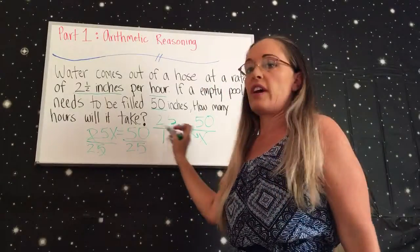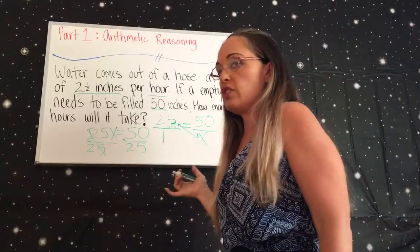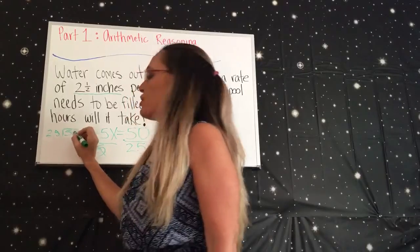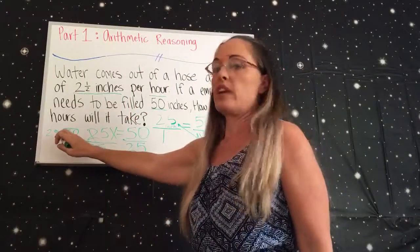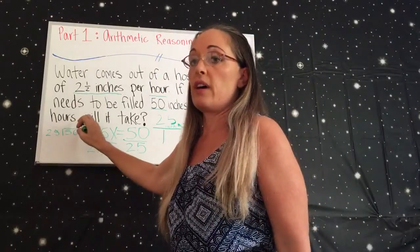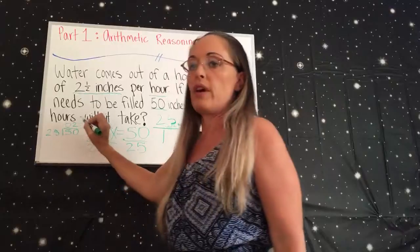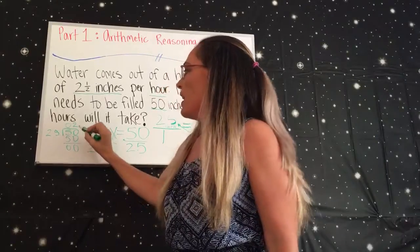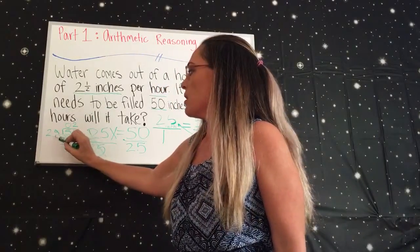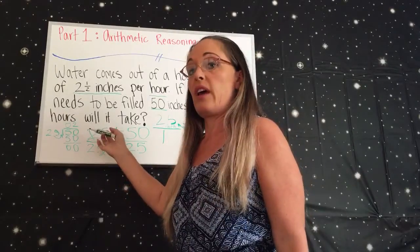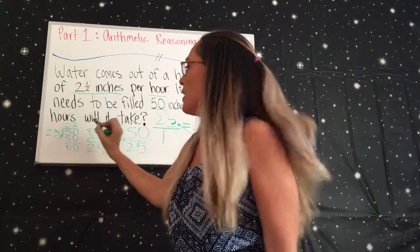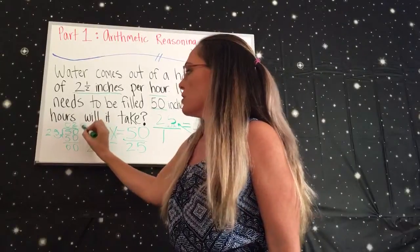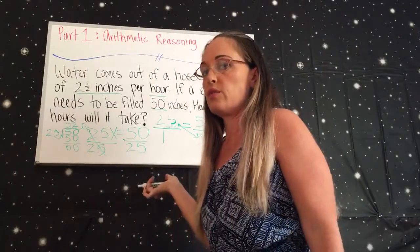Now you have X equals 50 over 2.5, and we're going to use long division to get that answer. 2.5 goes into 50 — just ignore the decimal in the 2.5 and say 25 into 50. You get 2, and 2 times 25 is 50. Because we looked at it as 25 instead of 2.5, we also move the decimal place over one, next to the 2, so that becomes 20. So 2.5 goes into 50 twenty times.